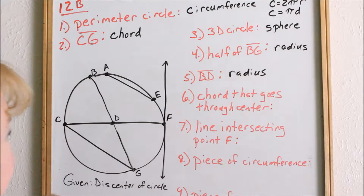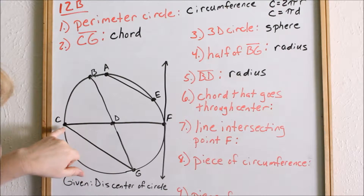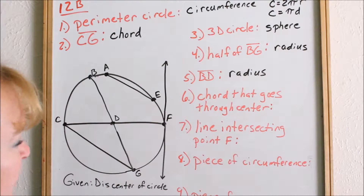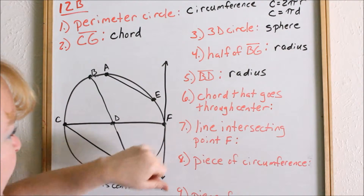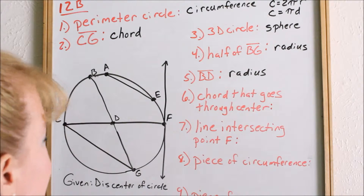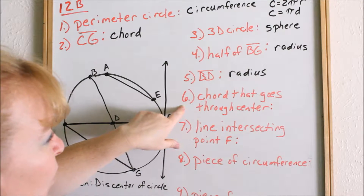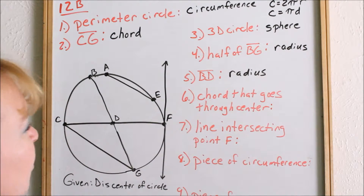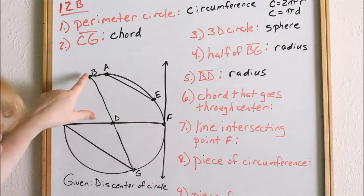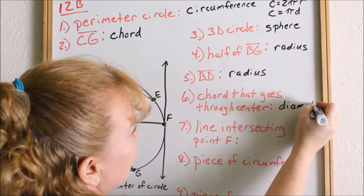Let's look at our picture. What other diameters do we have that go from one side of the circle to the other through the center? CF is a diameter — that's a chord that goes to the center. Some other radii we have are DF, DG, and DC. Those are all radii. Number six: a chord that goes to the center of the circle is the diameter. CF is a diameter, BG is a diameter — that is the definition of diameter.